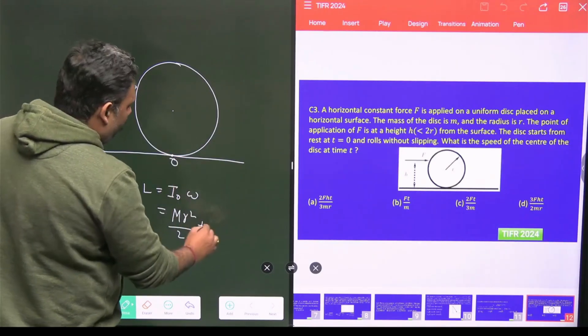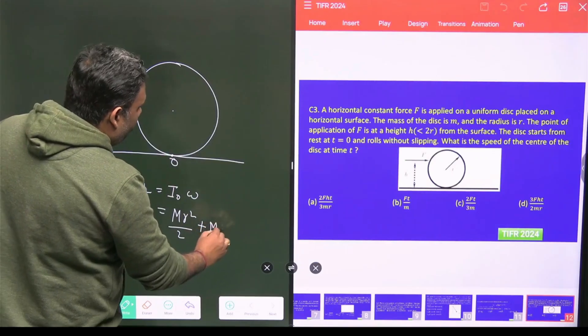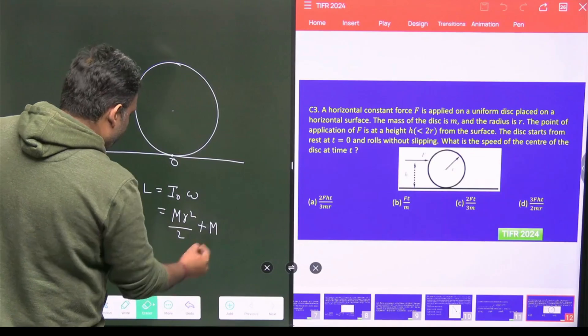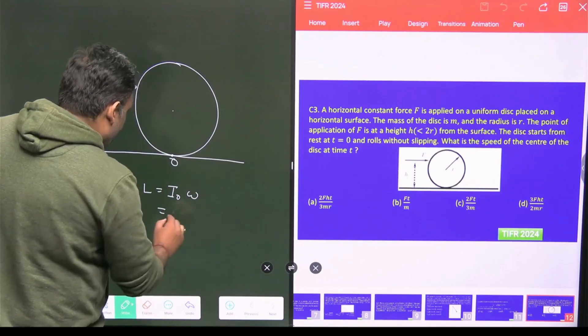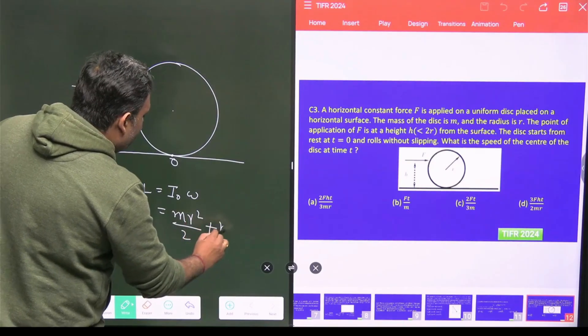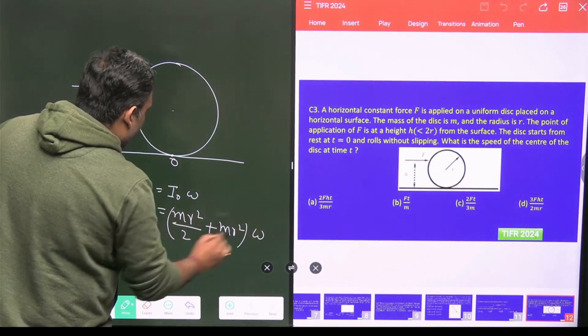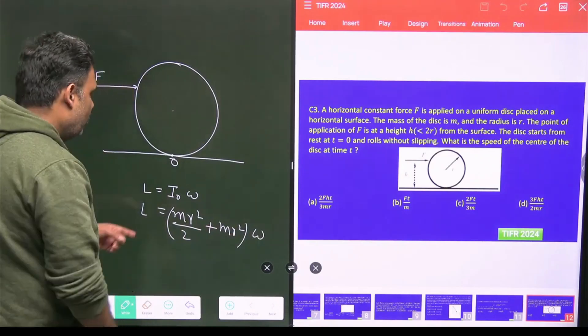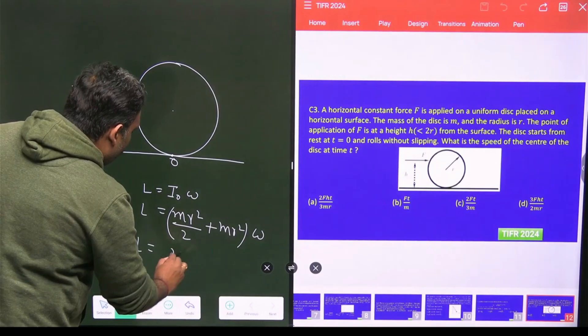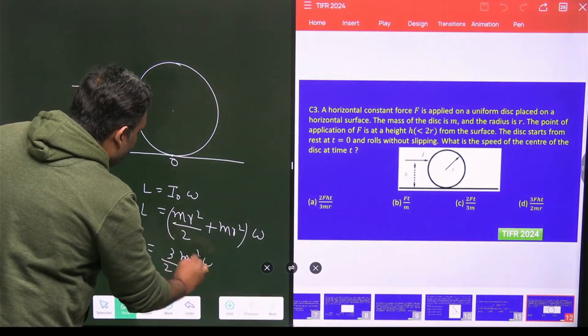And moment of inertia about point O, we have to use the parallel axis theorem. So that value is mr² by 2 plus mr². And here is your omega. So this is your angular momentum. So this L is basically 3 by 2 mr² omega.